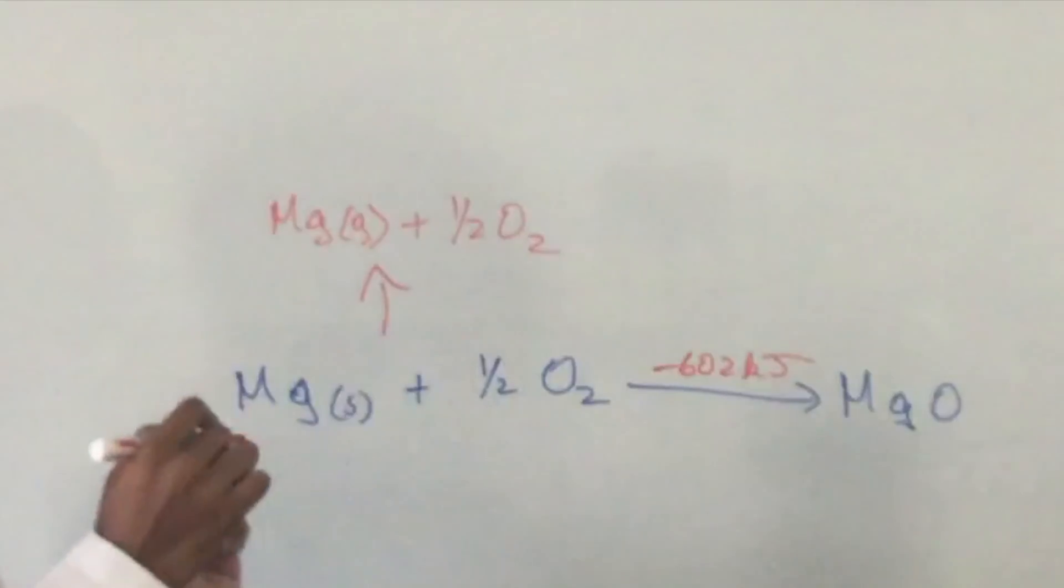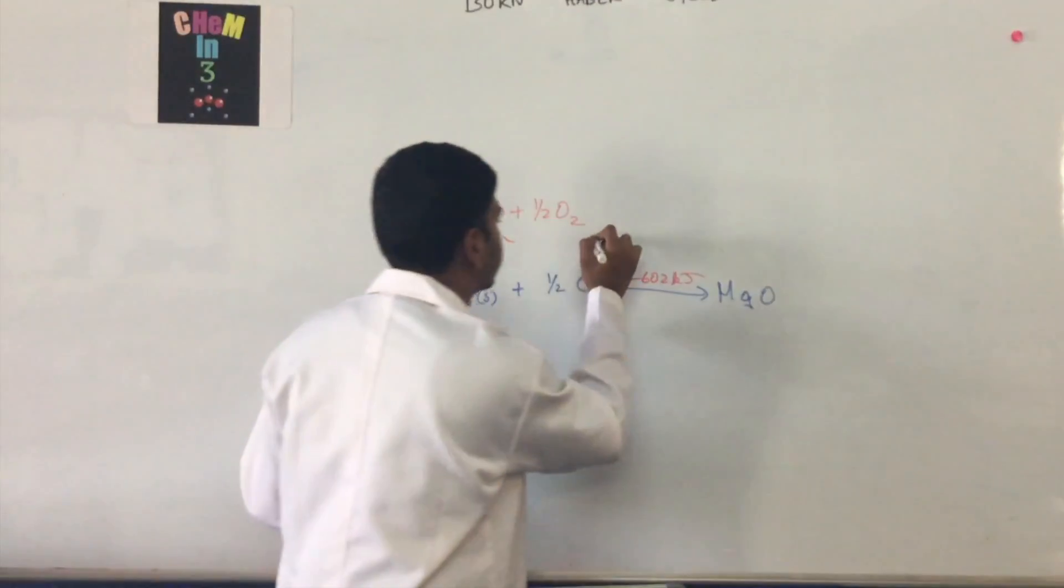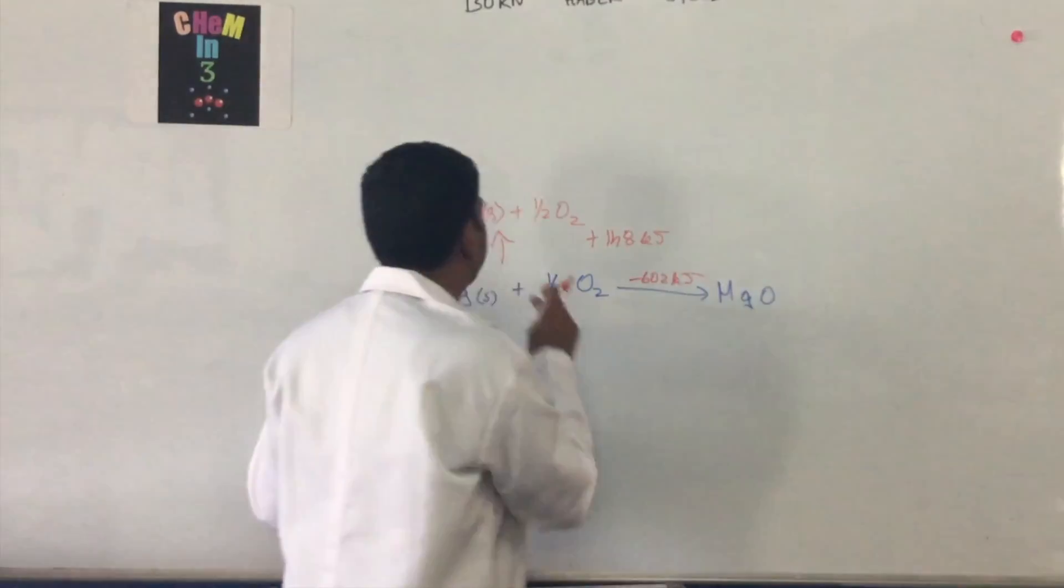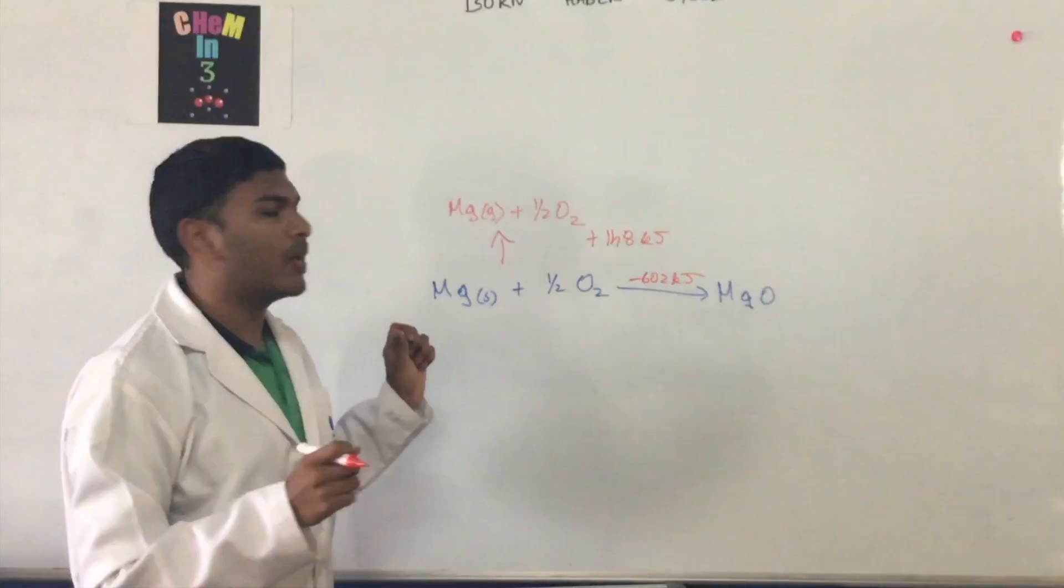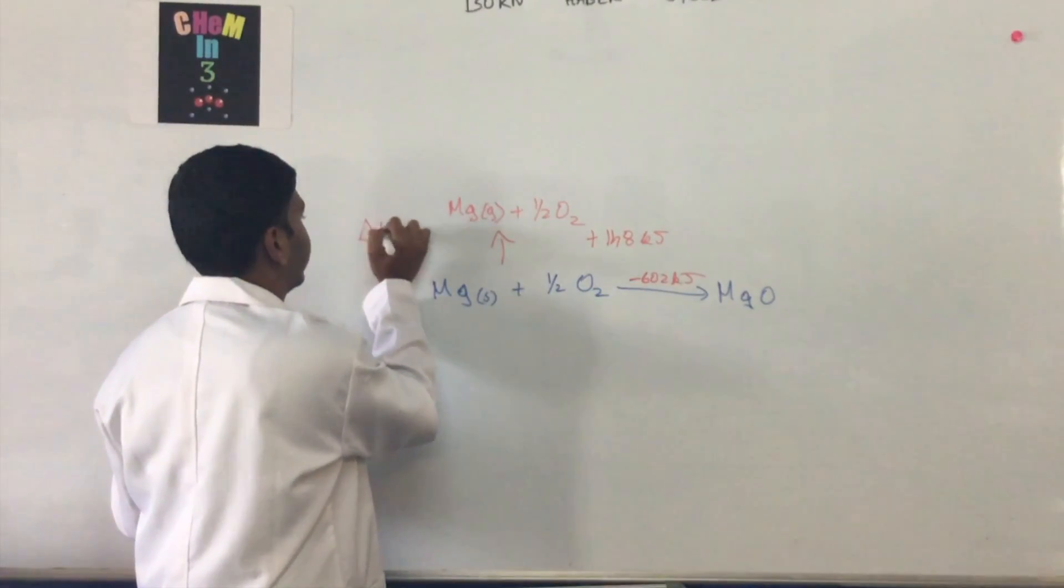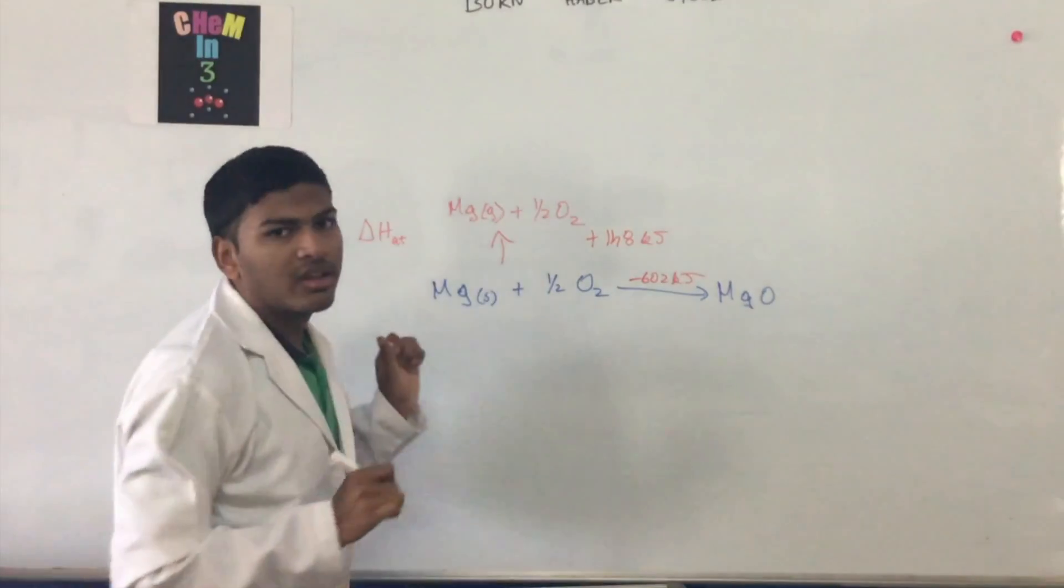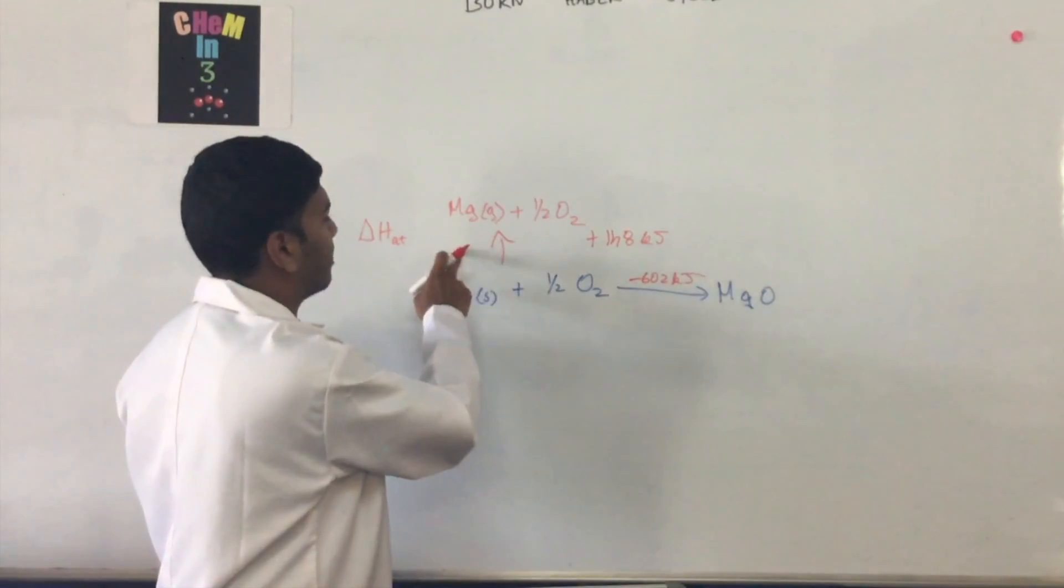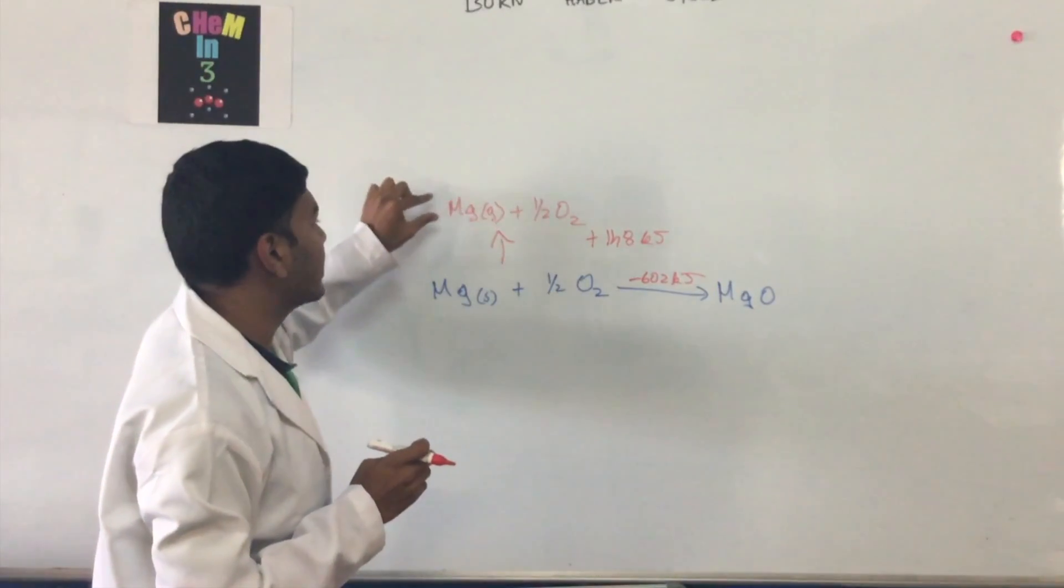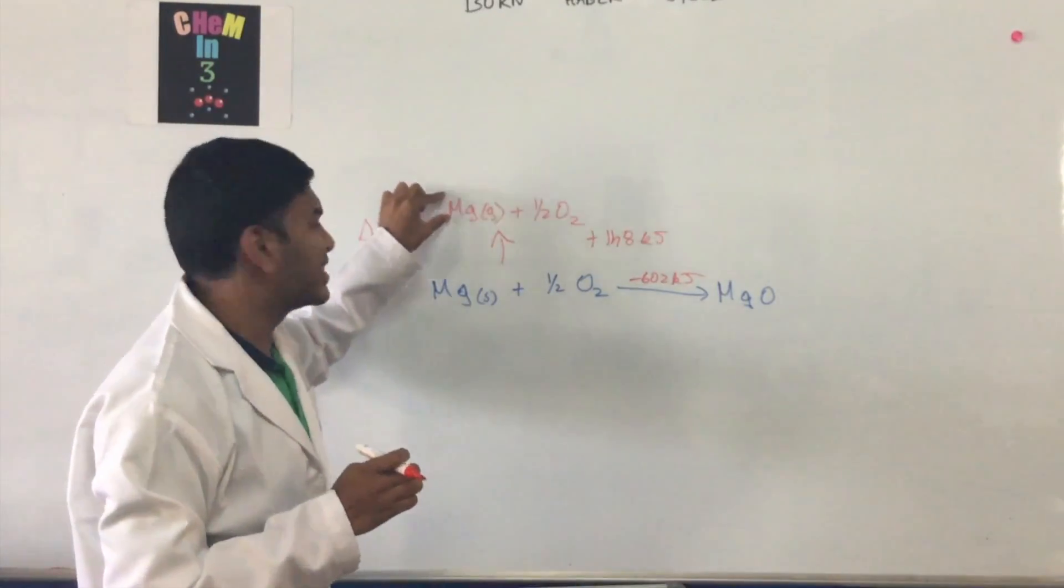And this is at plus 148 kilojoules. Now this process is referred to as the atomization of magnesium, or as I am writing, ΔHat of magnesium. This plainly just says that one atom of magnesium is in its isolated gaseous state.